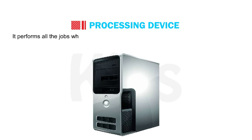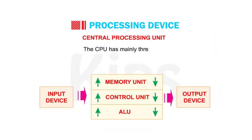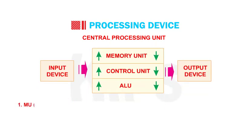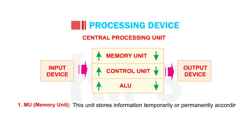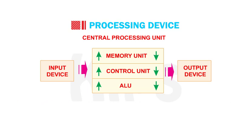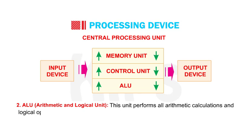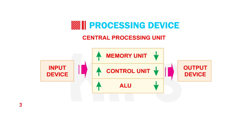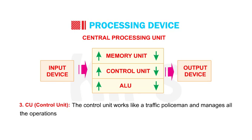The CPU performs all the jobs which we want it to do. It is also known as the system unit. The CPU has mainly three parts. First, the Memory Unit (MU), which stores information temporarily or permanently according to our need. Second, the Arithmetic and Logical Unit (ALU), which performs all arithmetic calculations and logical operations. Third, the Control Unit (CU), which works like a traffic policeman and manages all the operations of a computer.